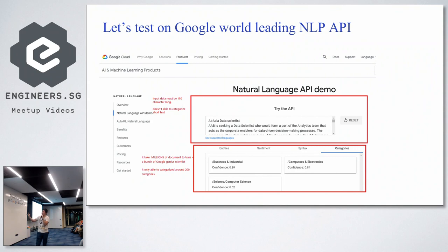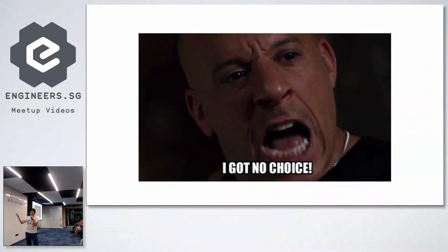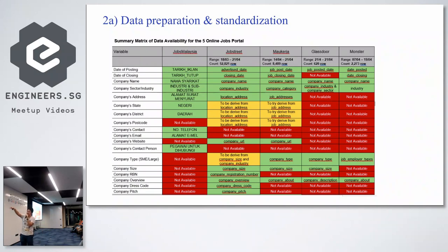We tried the Google Word API — it classifies very generic topics well, but it doesn't meet our specific needs. Always understand your problem and frame it based on your use case; in this case we had to build our own customized classification model. We had four different data sources: JobMalaysia, JobStreet, Malquerje, Glassdoor, and Monster. Because they come from different sources with different data structures, we needed standardization and normalization, and we also did information extraction and enrichment with other data sources.